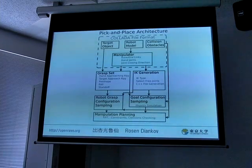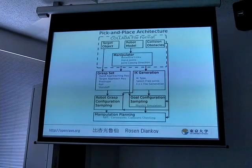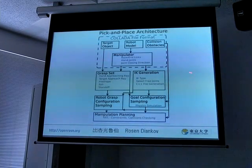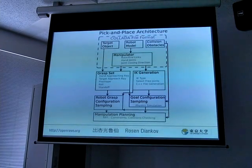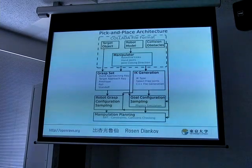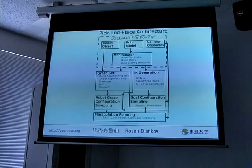Here are basically the components that made the simple demo possible. At the top we have the COLLADA file formats, which we talked about in the last session. These define the CAD models but also define parts about the robot: where the manipulator is, where the joints of the fingers are, how they close — very rough information, but enough to annotate and use the robot for planning afterwards.